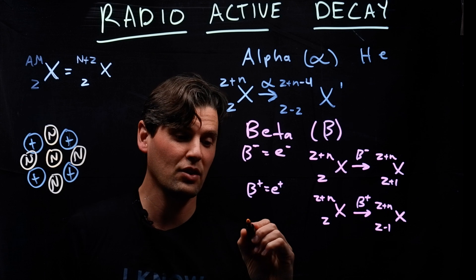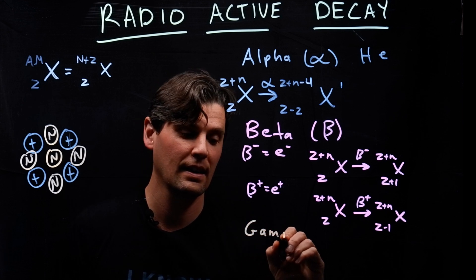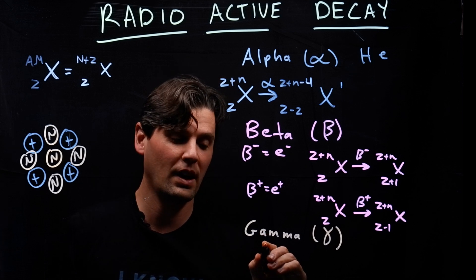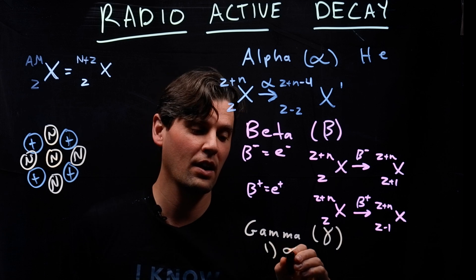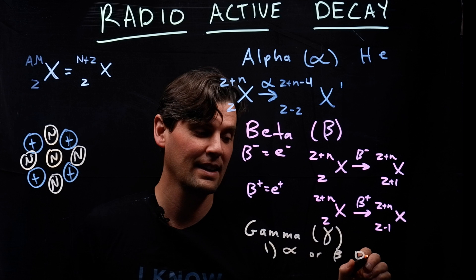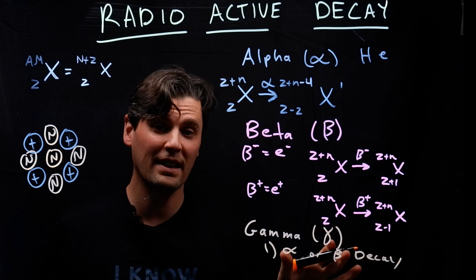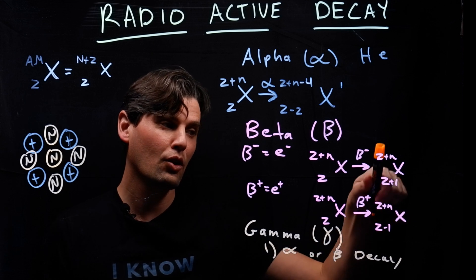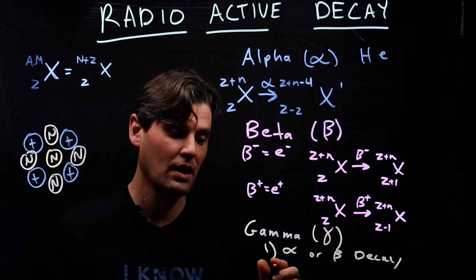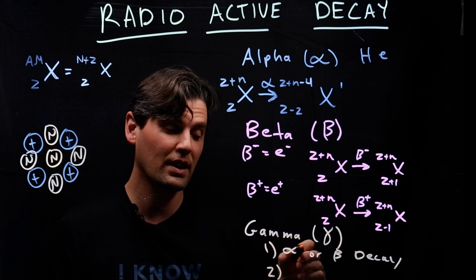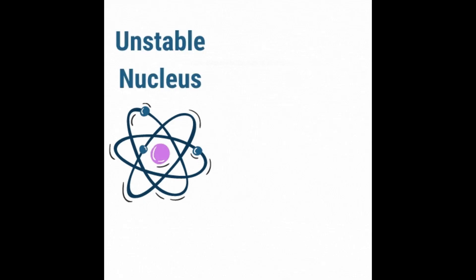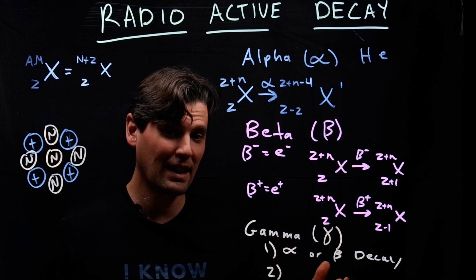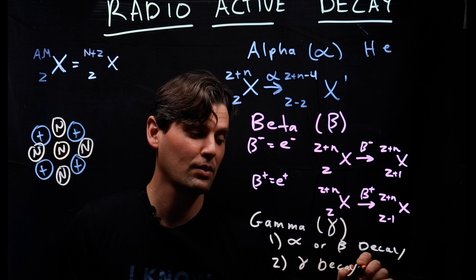The final decay we'll talk about is gamma decay. First, you're going to have either an alpha or a beta decay, which puts the nucleus into an unstable state. After that alpha or beta decay, you're going to have a gamma decay, wherein that unstable nucleus emits electromagnetic radiation called a gamma ray, which brings more stability.